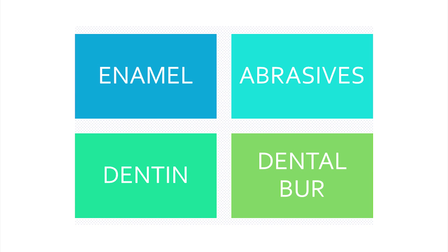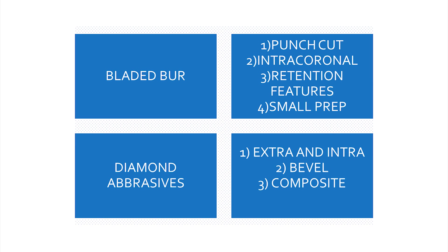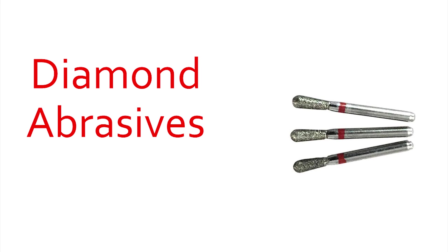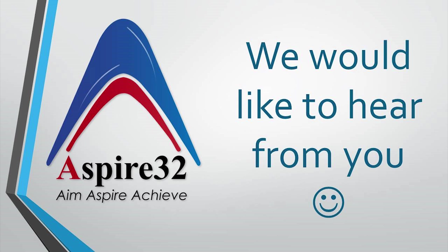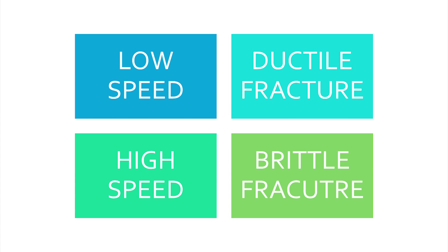Textbooks also say that for a punch cut — the initial entry into tooth preparation — or for intracoronal cavity preparation, secondary retention and resistance features, or conservative preparation, you should prefer a bladed burr. Diamond abrasives are preferred for bevels, rough surface preparation to enhance composite bonding, and for both extracoronal and intracoronal preparations. One major point: when you use a dental burr or diamond abrasive at low speed, whether cutting enamel or dentine, you will always end up cutting by ductile fracture.